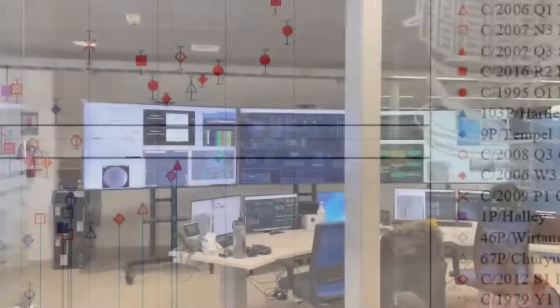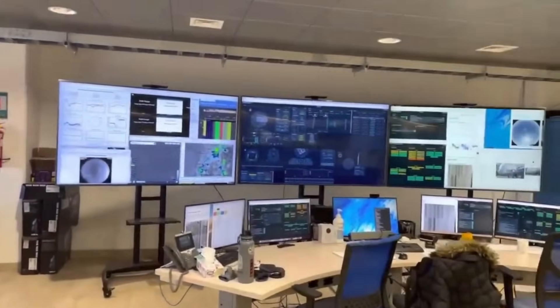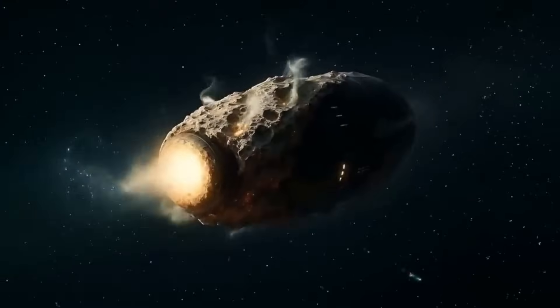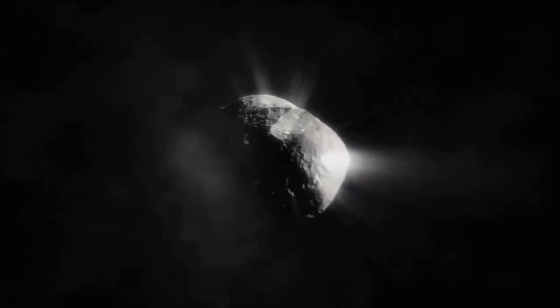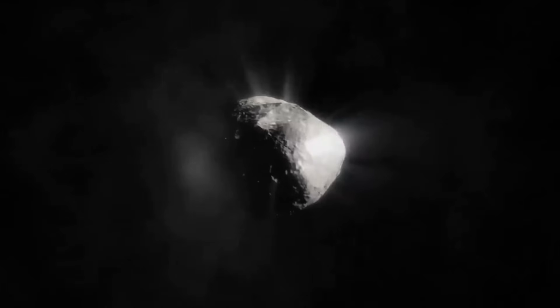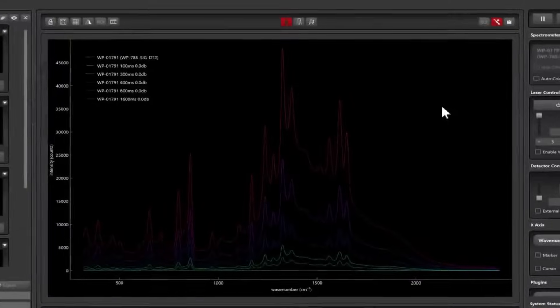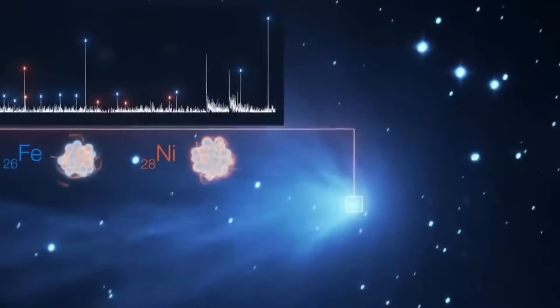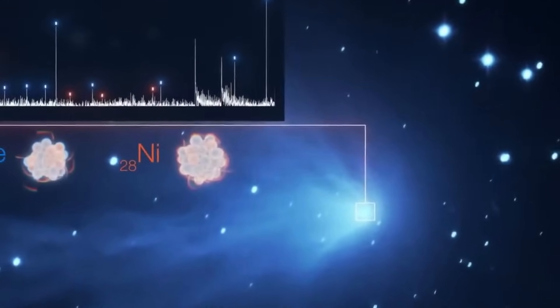Borisov gave scientists hope that maybe Oumuamua was just a weird exception, and that most visitors from other star systems would behave the way they expected. They started to think they understood how interstellar objects worked. They were wrong. Enter 3I/Atlas, the third interstellar object ever discovered and the most baffling one yet.